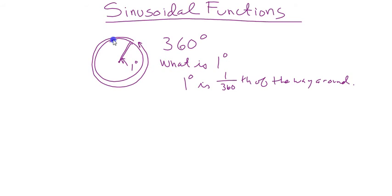Nobody actually knows. We could speculate — it's 365 days in a year, it's close to that. My personal theory is that 360 is divisible by a lot of numbers: 2, 3, 4, 5, 6, 9, 10, 12. A lot of numbers go into it, so we can divide it up nicely — like 90 goes into it, that's how we get 90 degrees and right angles.